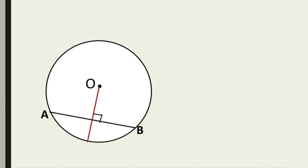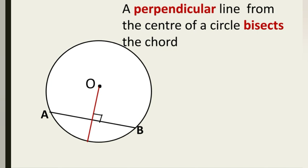The final rule — Rule number 8 — states that a perpendicular line from the center of a circle bisects the chord. In our diagram the perpendicular line passes from center O through the chord. Bisecting means it divides the chord into two equal parts — if one part is X, the other part is also X. Every time you encounter a question involving a perpendicular emerging from the center of a circle passing through a chord, apply this rule.